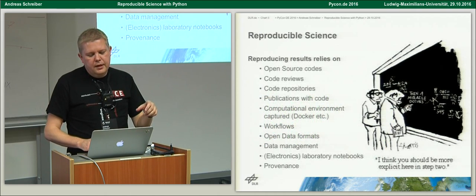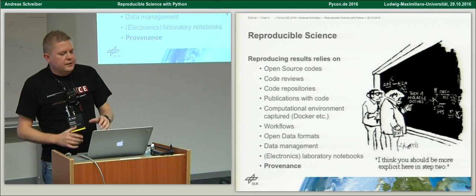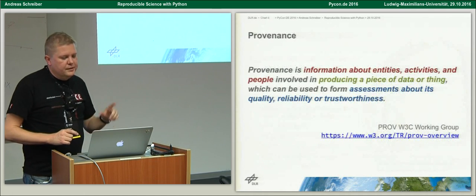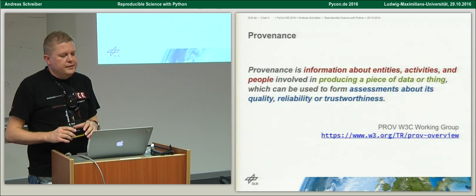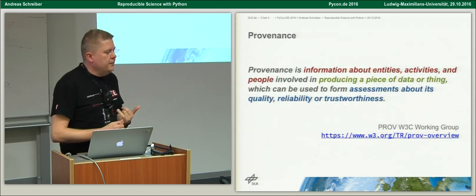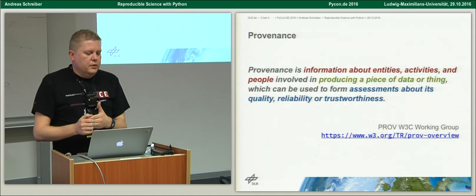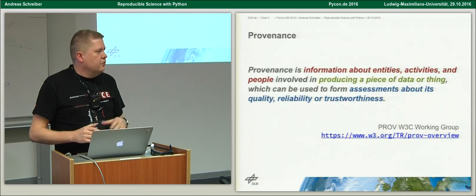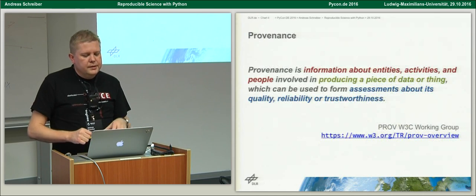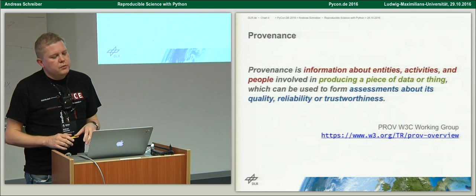One thing I'm going to talk about is provenance. This is a technology for gathering information about all the processes that you are doing. The definition of provenance is: provenance is information about all entities, activities, and people who are producing something — it can be a piece of data or a physical thing — in order to make assessments about quality, reliability, trust, and so on. This is the definition by the W3C Working Group on Provenance.